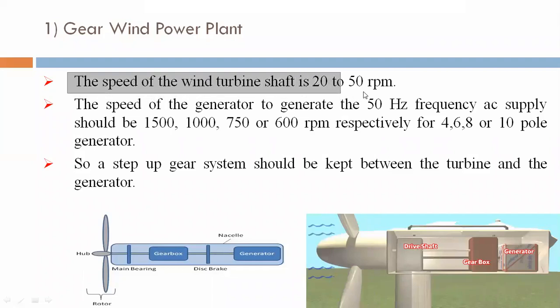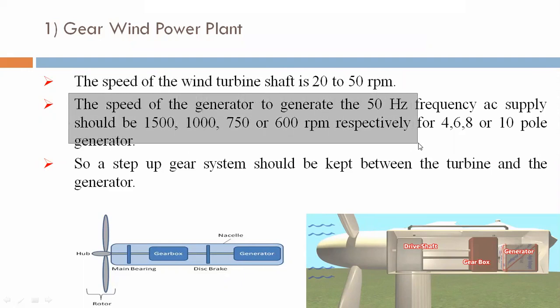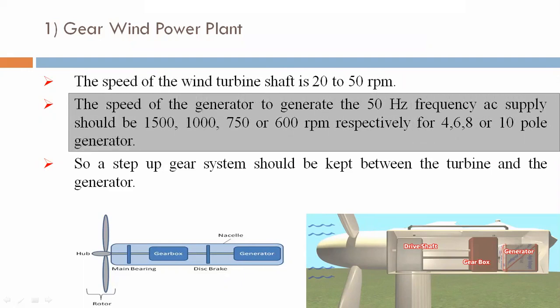The speed of the wind turbine shaft is 20 to 50 RPM. The speed of the generator to generate 50 Hz frequency AC supply should be 1500, 1750, or 600 RPM respectively for a four, six, eight, or ten pole generator.